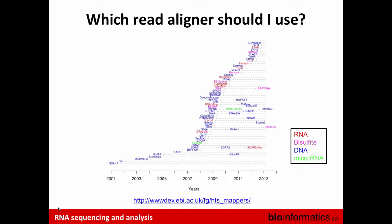This diagram shows a list of different aligners published since 2001 — there are a lot of them. The aligners for RNA are highlighted in red. The first one I want to highlight is TopHat. It has been used for a very long time, there are many publications using it, it has very good documentation and support, and most of the questions you have about running TopHat you'll probably find answers for online.